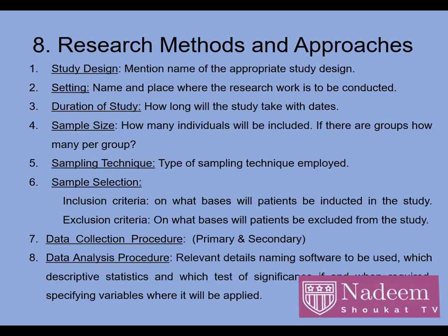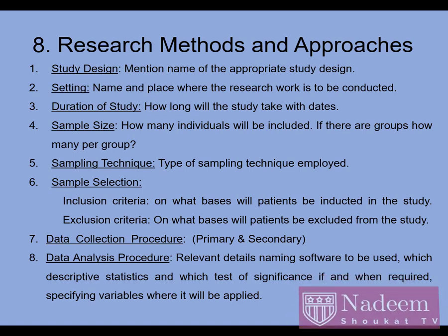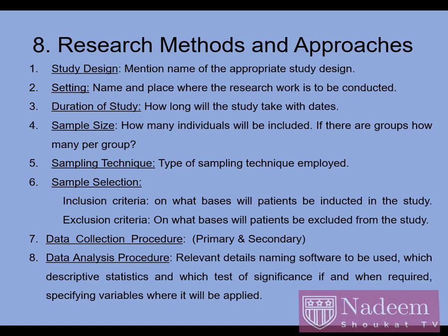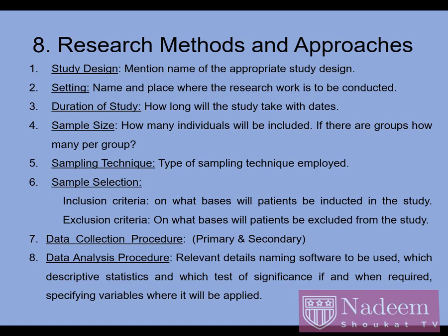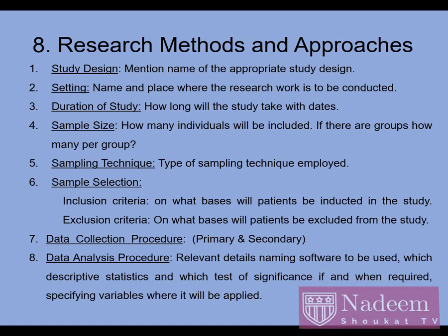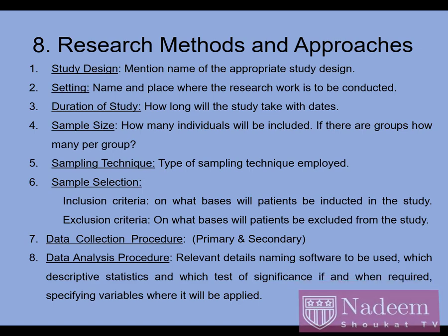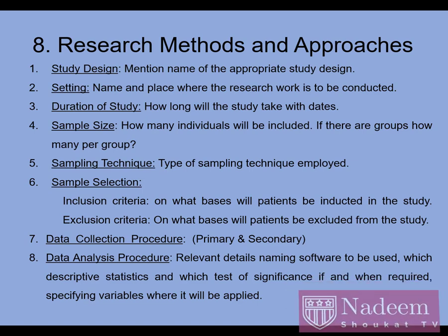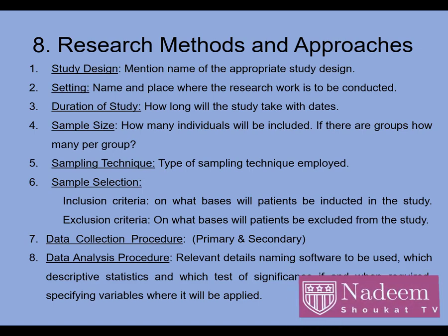Research methods and approaches: Is section mein tamam cheezein aayein gi — study design, research setting, duration, sample size, sampling technique (probability or non-probability sampling), sample selection criteria, inclusive and exclusive criteria. Also, data collection tools are mentioned: primary data collection ya secondary data collection. Primary data is raw, first-hand data collected through observation, questionnaires, or face-to-face interactions.